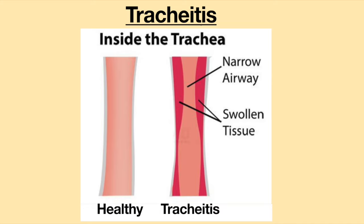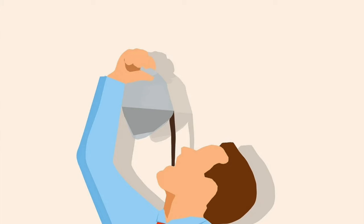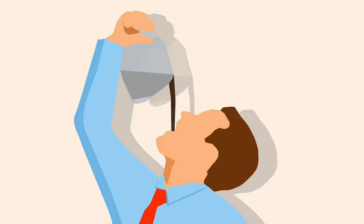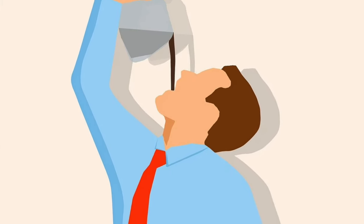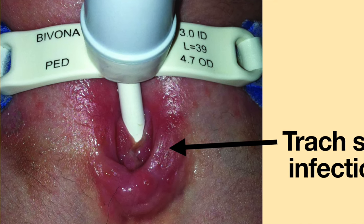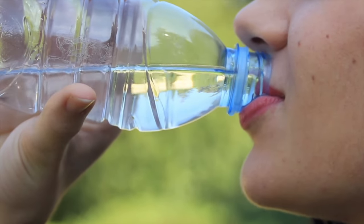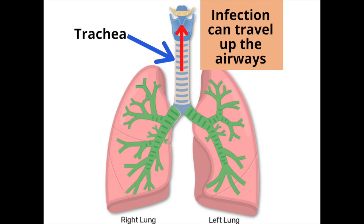Tracheitis causes swelling in the trachea, which may cause pain. The trachea may feel as though it is on fire, or it may feel as though someone is pouring acid down the trachea. The tracheostomy site may become red and produce a thick yellow drainage. Tracheitis may cause a sore throat and swallowing may become painful. The infection in the trachea can also travel up the airways, causing pain and pressure in the ears and a stuffy or runny nose.